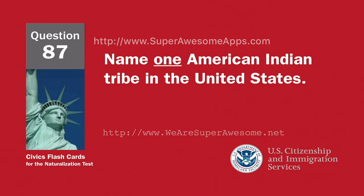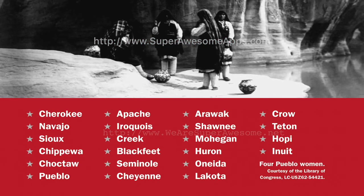Name one American Indian tribe in the United States. Cherokee. Navajo. Sioux. Chippewa. Choctaw. Pueblo. Apache. Iroquois. Creek. Blackfeet. Seminole. Cheyenne. Arawak. Shawnee. Mohegan. Huron. Oneida. Lakota. Crow. Teton. Hopi. Inuit.